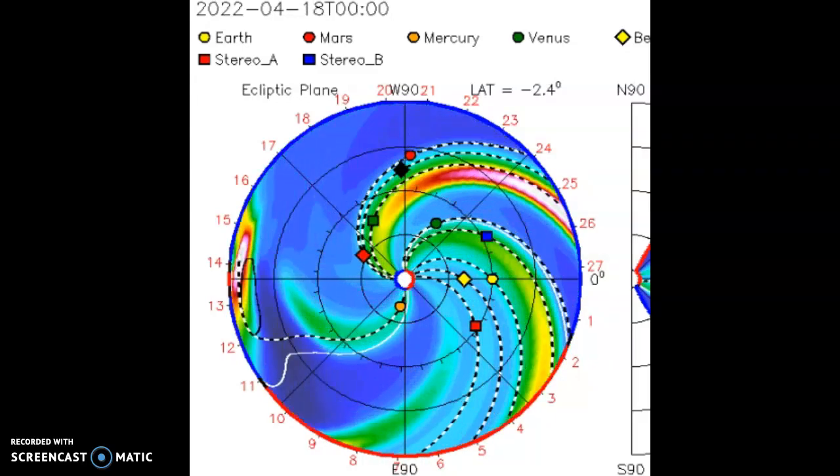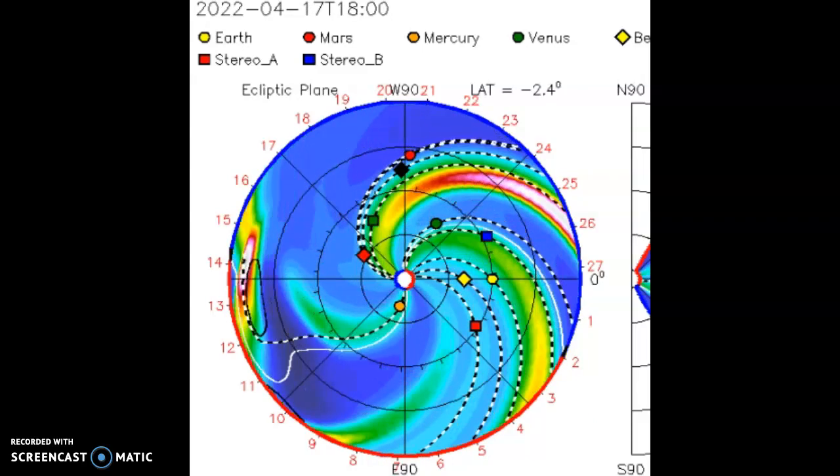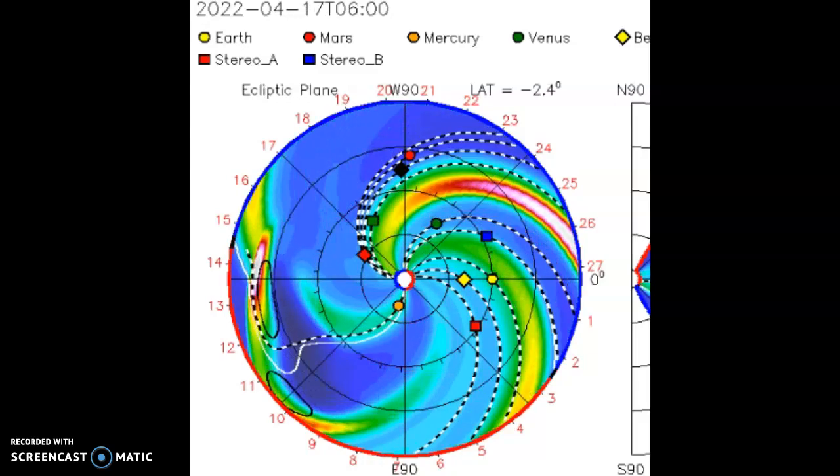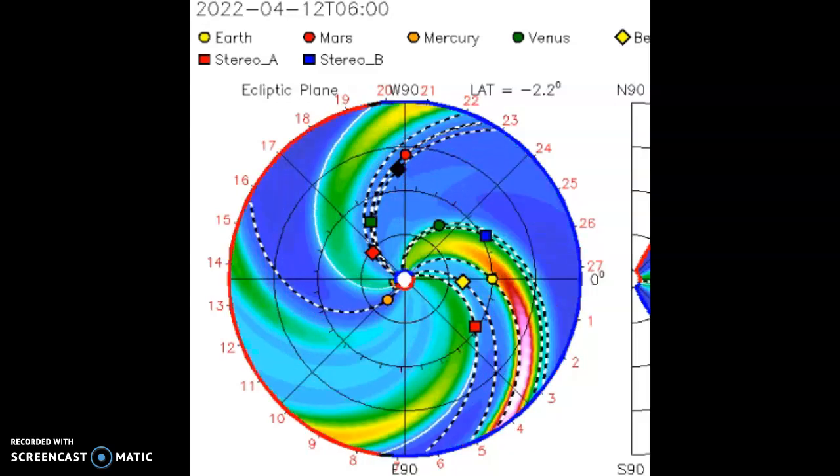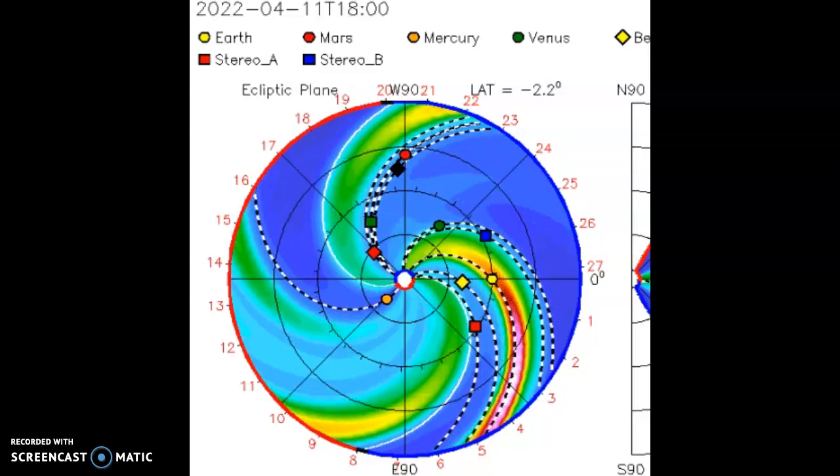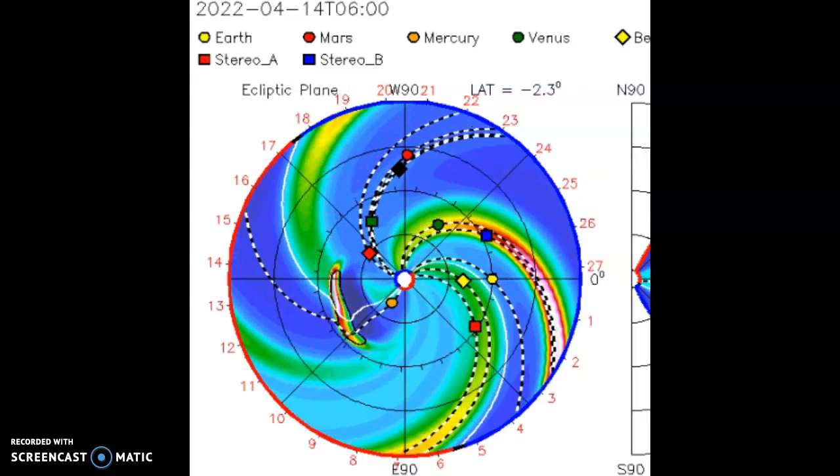NASA continues. If the CME overwhelms Mercury's relatively weak magnetic field, it could scour material off the planet's surface, creating a temporary atmosphere for Mercury and adding material to Mercury's comet-like tail.